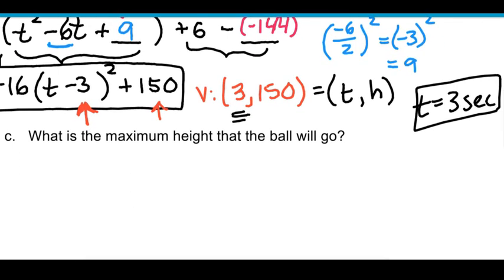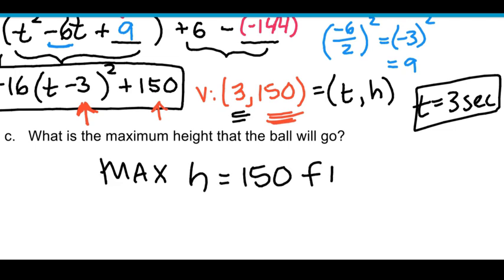Part C says, well, what is the maximum height that the ball will go? We already did all the hard work. It's this y value right here from the vertex. And so the maximum height, so I'll just write it as max height, max h is 150, and we were told our units are feet here. So maximum height.